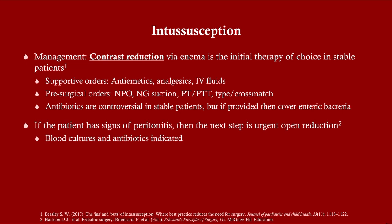Supportive orders should be given immediately upon suspicion. Give anti-emetics — we don't want these patients more uncomfortable than they already are, and vomiting will worsen their condition. Give analgesics such as morphine, and IV fluids — all very important even before a formal diagnosis is made. Because these patients may need surgery, ensure pre-surgical orders are in place: NPO until symptoms resolve, NG suction, and pre-op labs including PT, PTT, and type and crossmatch.